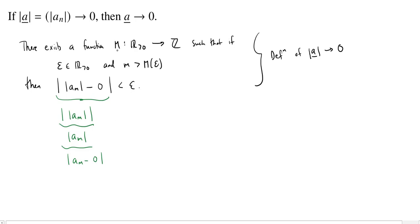So using the exact same eventually function m, we get exactly the definition that a converges to zero, not just the absolute value. We would need that the mth term in the sequence, when you get past the eventually number for epsilon, is within epsilon of zero.